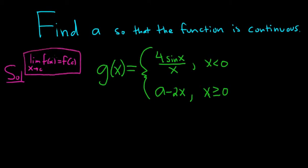What does this mean? It means that the limit exists — in this case, the limit from the left exists and the limit from the right exists. So whenever you have a problem like this with less than and greater than, start by looking at one-sided limits and make them equal.